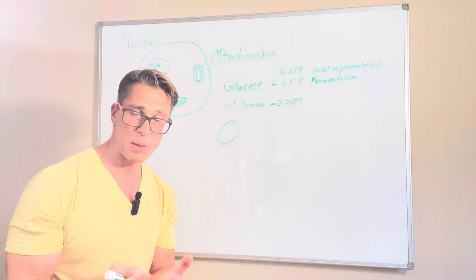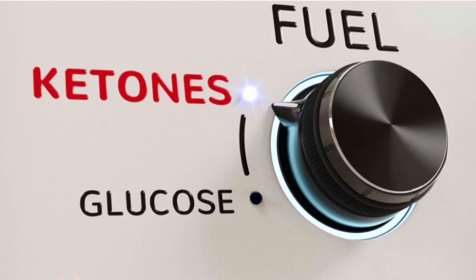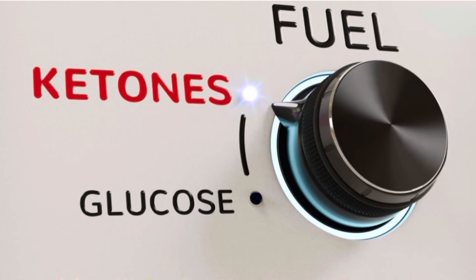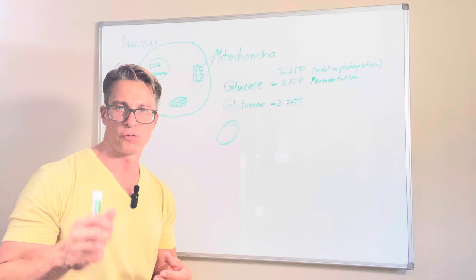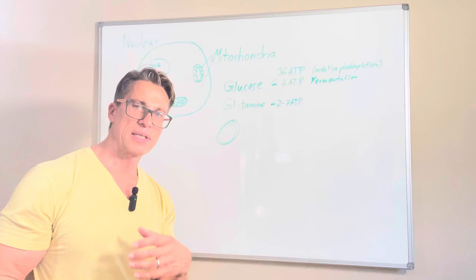Ketones are made in the liver by virtue of converting fat. The body takes fat and the liver breaks it down into these ketone bodies, and these ketone bodies are used differently in mitochondria. Ketone body metabolism actually runs very clean.